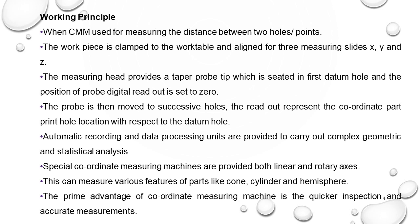Some special coordinate measuring machines are provided with linear and rotary axes — apart from X, Y and Z, some rotary axes are also there, making more than three axes. This can measure various features of parts like cone, cylinder, hemisphere, etc. The advantage of coordinate measuring machines is quicker inspection and all inspections are accurate.